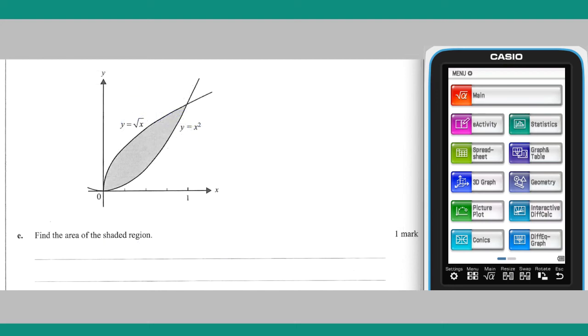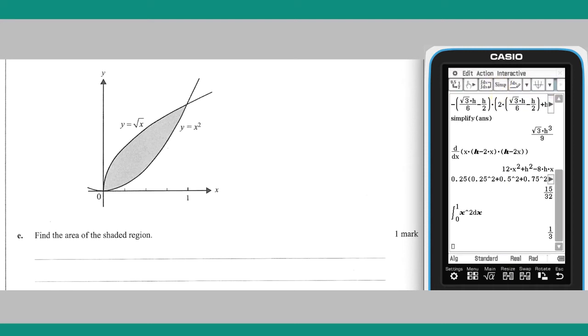Part E: the area between these two functions bounded by their intersection points at 0,0 and 1,1 can be calculated using a definite integral.